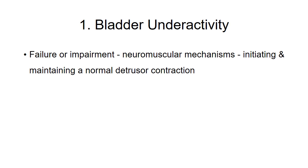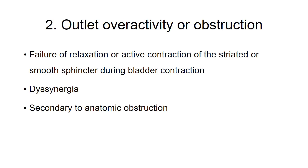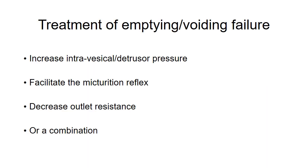Emptying or voiding failure is mainly due to bladder underactivity — failure or impairment in one of the neuromuscular mechanisms necessary for initiating and maintaining a normal detrusor contraction. It can also be due to outlet overactivity or obstruction, usually secondary to failure of relaxation or active contraction of the sphincters at the time of detrusor contraction, causing detrusor-sphincter dyssynergia, or due to anatomic obstruction. Treatment principles include increasing the intravesical or detrusor pressure, facilitating the micturition reflex, decreasing outlet resistance, or a combination.